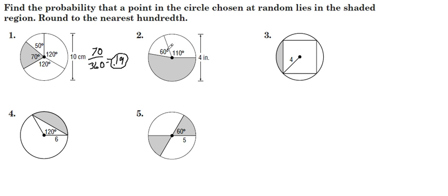For number 2, we got 60 and 110. The angle measure we're missing is 190 to make that whole 360. So we're going to take 190 over 360. That gives us .53, about 53% of the circle is shaded.